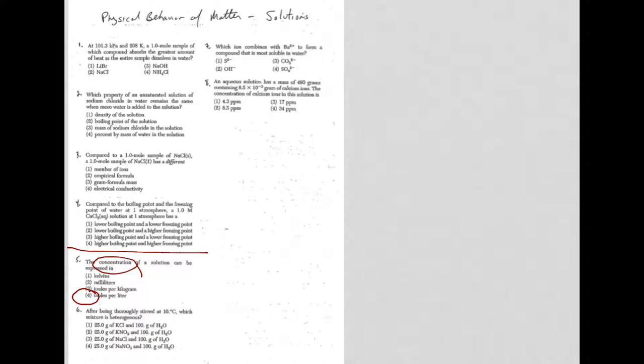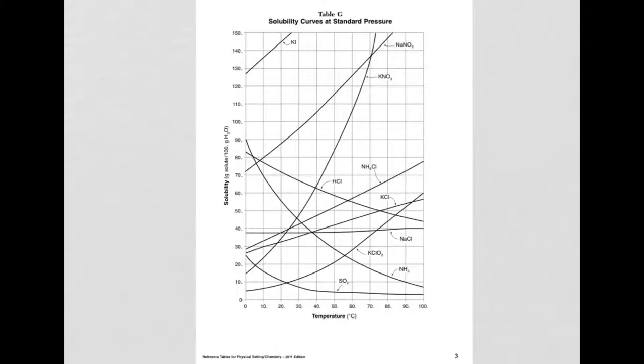Let's take a look at question 6. After being thoroughly stirred at 10 degrees Celsius, which mixture is heterogeneous? If it is heterogeneous, it means it's not going to look the same throughout. And how are you supposed to know this? Well, you actually have to go to the reference tables and find the solubility curves, reference table G. The first thing they told us was that we were at 10 degrees, so I'm going to draw this in.